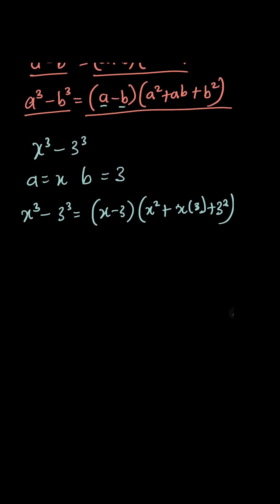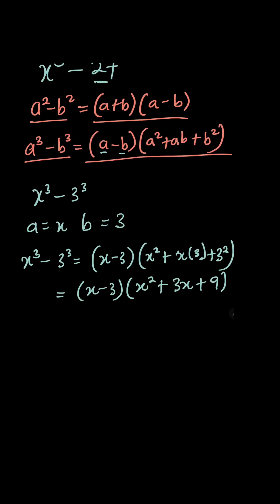So now let's simplify our expression. You are going to get x minus 3, x squared plus 3x, plus now 3 squared is what? 9. So when we factorize this expression, we are going to get this. So therefore, x cubed minus 27 equals that.